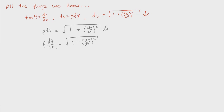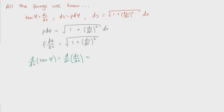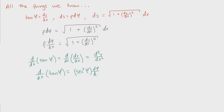The only equation we can use to find d(phi)/dx is tan(phi) = dy/dx. Taking the derivative of both sides with respect to x, the right side simply becomes the second derivative of y with respect to x. On the left side, the derivative of tan(phi) is sec²(phi), and applying the chain rule gives sec²(phi) * d(phi)/dx = d²y/dx².